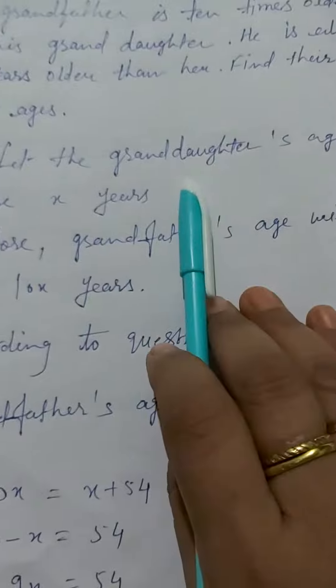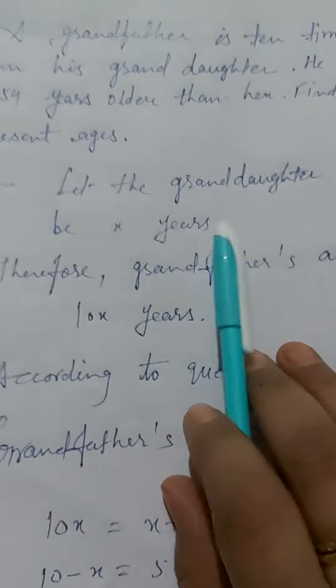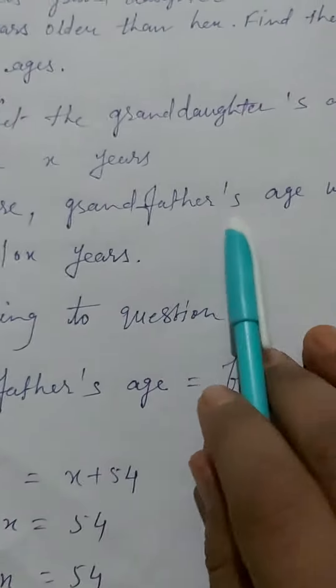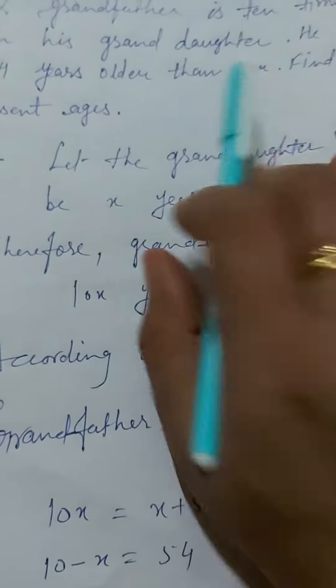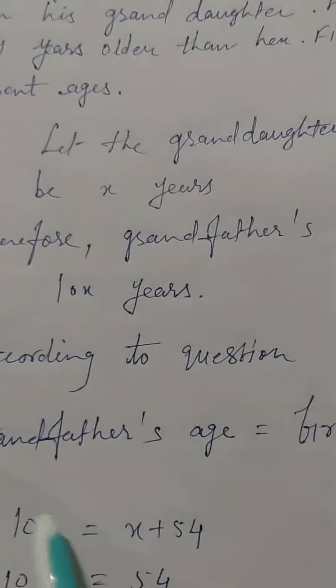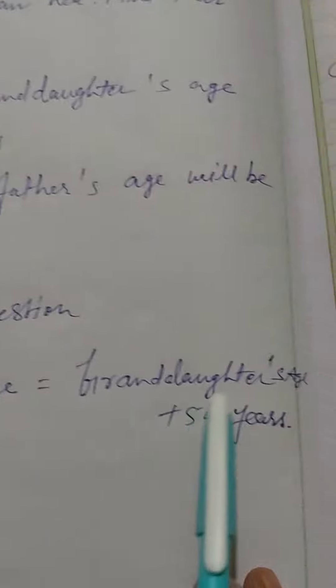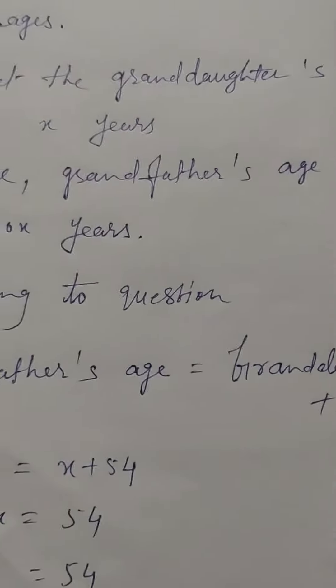Let the granddaughter's age be X years. Therefore, grandfather's age will be 10X years. A grandfather is 10 times older than his granddaughter. So, according to the question, grandfather's age equals granddaughter's age plus 54 years.